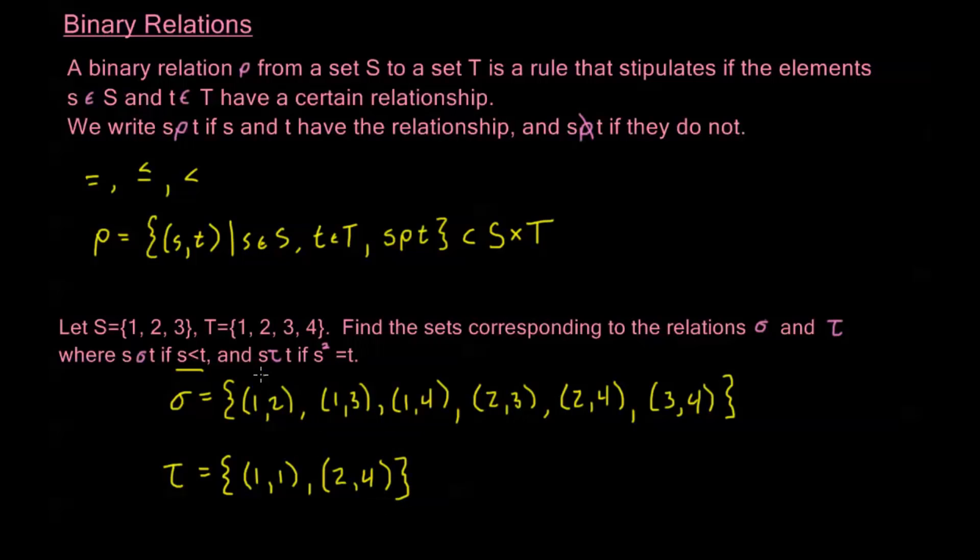And that's it. The only other possible s I could have is 3, but 9 is not in my T. So these are all of the ordered pairs that satisfy the relationship τ on the sets T and S.